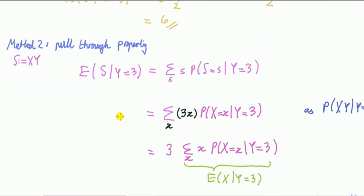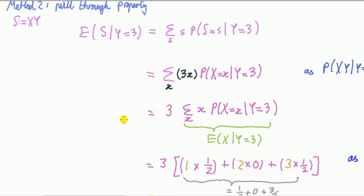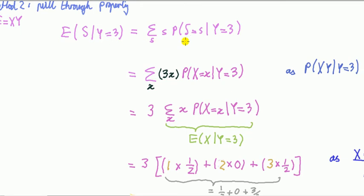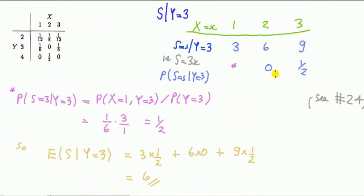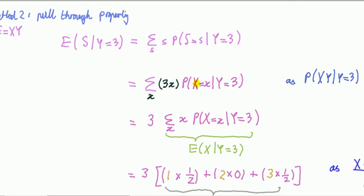Now for Method 2, we use the pull-through property. The key observation is that when we condition on Y, only the distribution of X given Y matters. If S equals three, that's the same as X equals one; if S equals six, X equals two; and so on. So the probability structure of S given Y equals three is exactly the same as the probability structure of X given Y equals three.